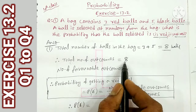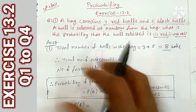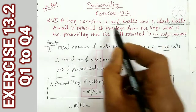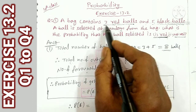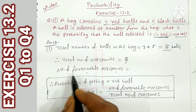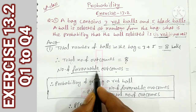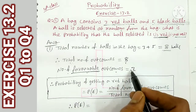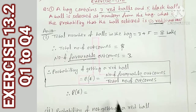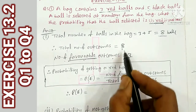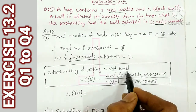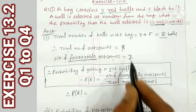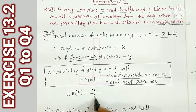The total number of outcomes is 8. The number of favorable outcomes for getting a red ball: any time you pick a red ball, you have 3 chances, because there are 3 red balls. So the favorable outcomes are 3. The probability of the event to get a red ball: number of favorable events is 3, total is 8.